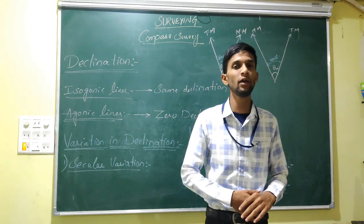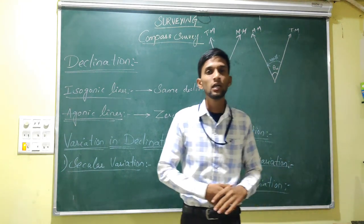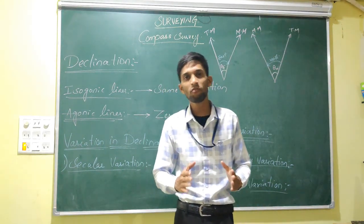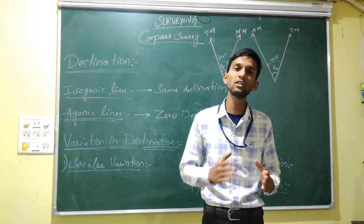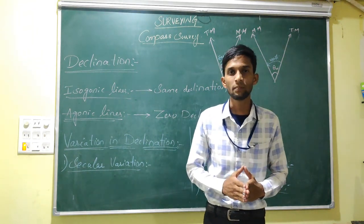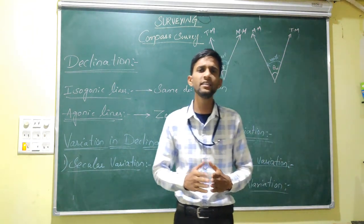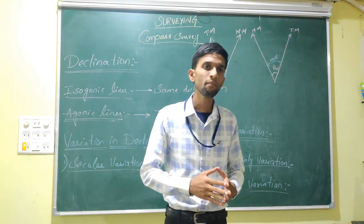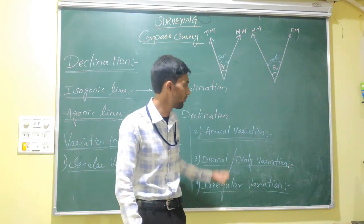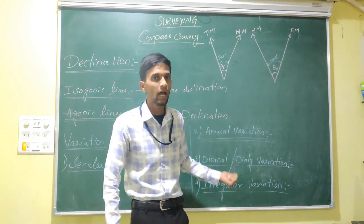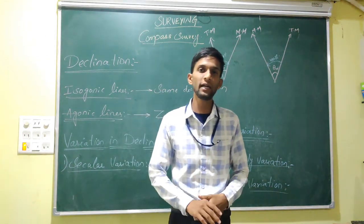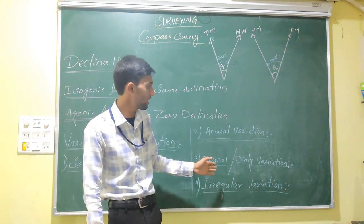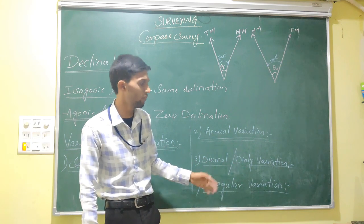What is annual variation? If you observe throughout a year, the variation in declination averages about 1 to 2 minutes. That is called annual variation. And if we observe for a day or 24 hours, it is called daily variation or diurnal variation.